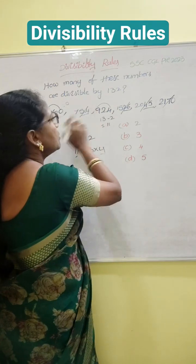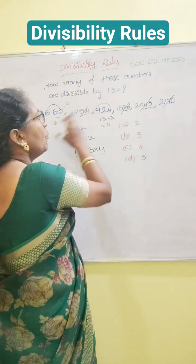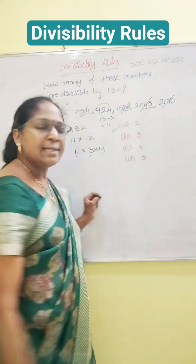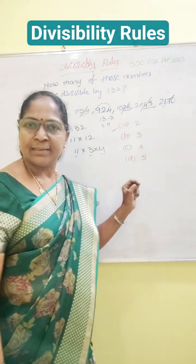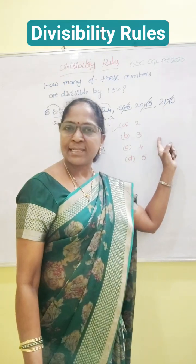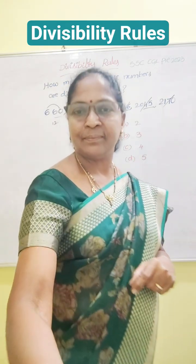So how many numbers are divisible by 132? The answer is 2 numbers. This is the right answer. If you like this video, please like, share and subscribe to my channel. Thank you.